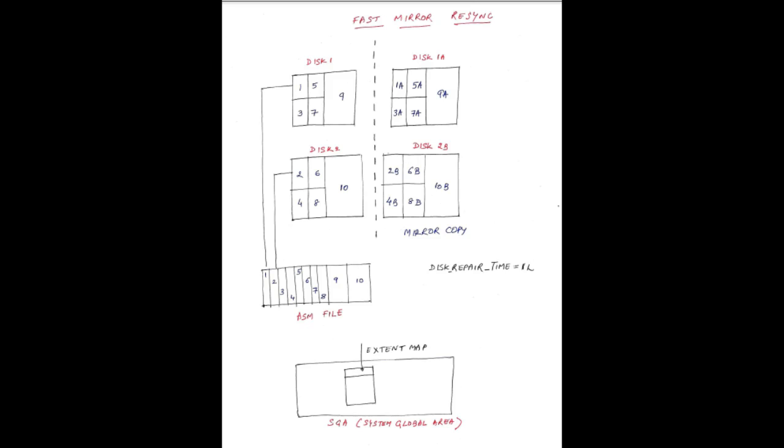To summarize: we have ASM disk and ASM file. The ASM disk has allocation units called AU, which are 1MB in size by default. As the file grows, it gets extents from both disks. Initially, one extent equals 1 AU equals 1MB.